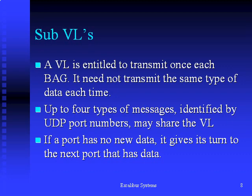The virtual link determines the path and frequency of the data to be transferred — it does not define the contents. The contents are defined a level below the virtual link. Up to four sub-VLs or ports may be defined per VL, so they share the BAG slot on a round-robin basis.